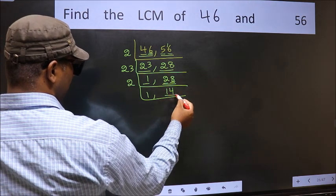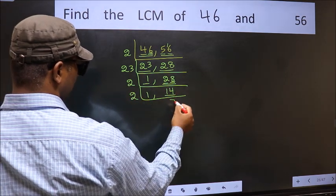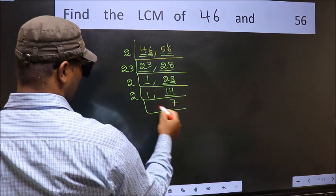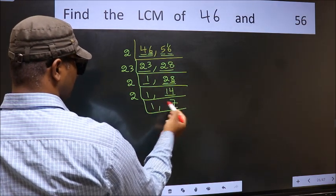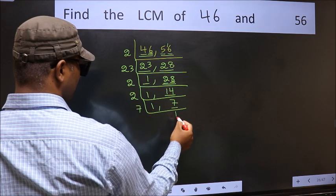Now here we have 14. 14 is 2 times 7 is 14. Now we have 7. 7 is a prime number, so 7 times 1 is 7.